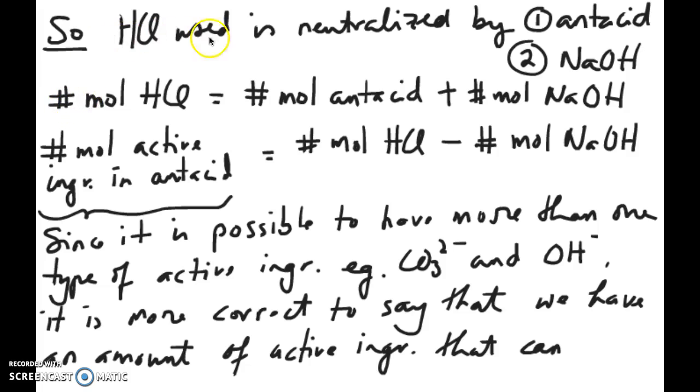So in other words the number of moles of HCl should equal the number of moles of the bases combined which is the number of moles of antacid, bases from antacid, plus the number of moles of NaOH.